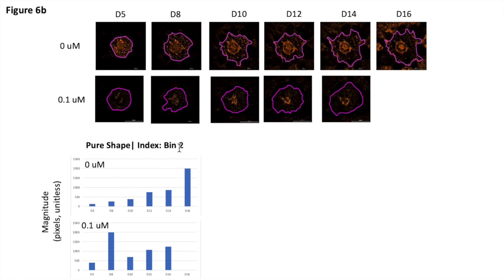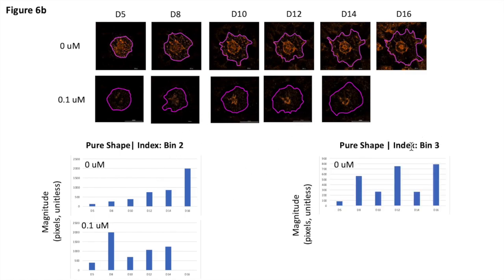This shows you that we can derive an index that captures specific features of spatial information in our series. Another index that was informative was simply bin number three. In the control group, you can see that there is a periodic change in the magnitude of this index. When you look at the same index in the treatment group, you see the same pattern of periodicity, but that periodicity ends with a large increase on day 14. We left out day 16 in this series because we think the border was outside of the field of view. As you can see here, both indices capture very distinct kinetics in a way that is precise and objective.